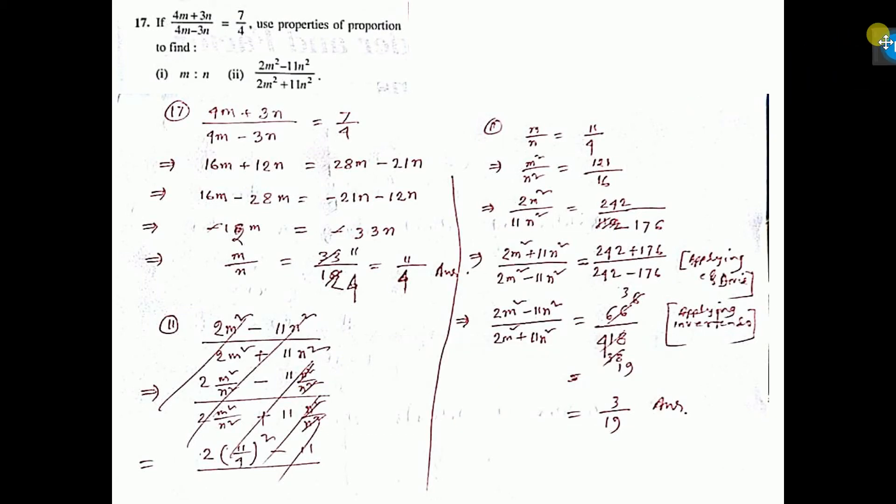Now we want to do number 17, both 1 and 2. Given this equals this, write it there, then cross multiply: 4 into this equals 7 into this.